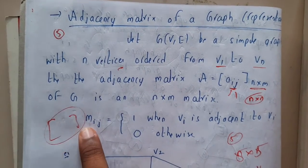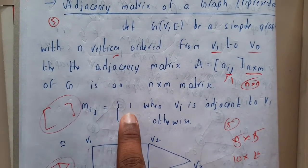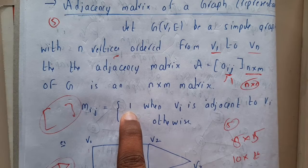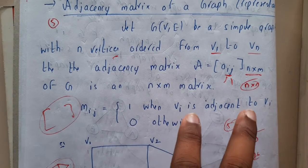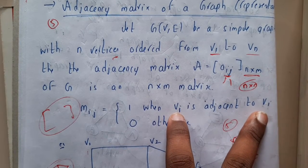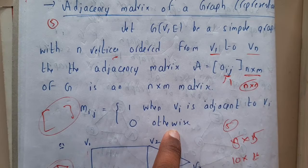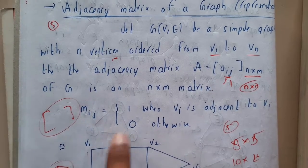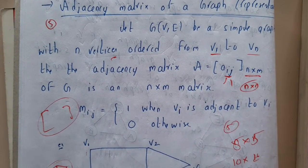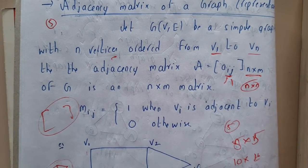A[i][j] equals 1 when there is a path between those two vertices, and 0 when there is no path. Once you go through the example you will have a clear idea of how to represent any given graph as a matrix.